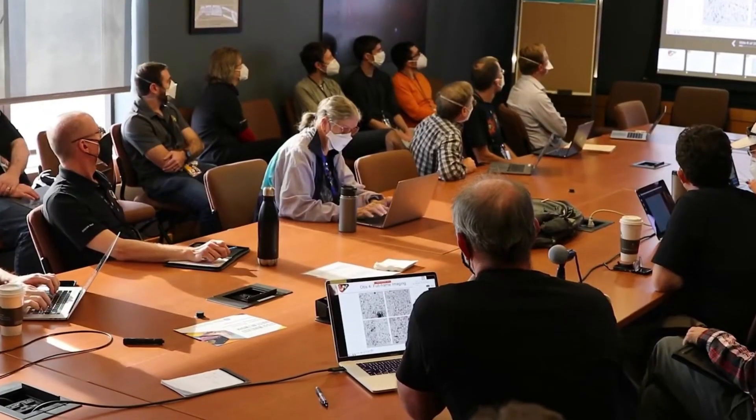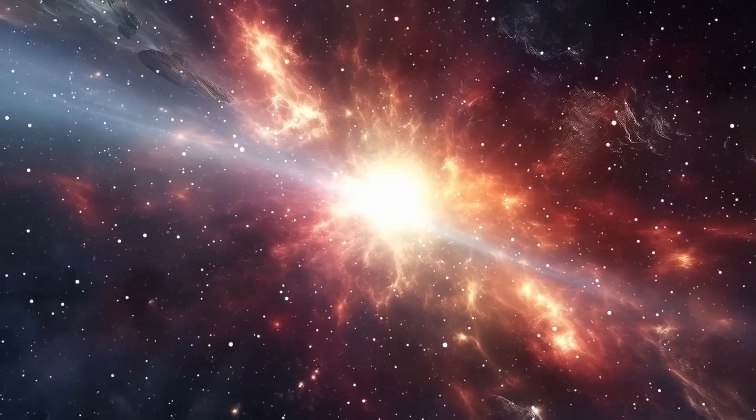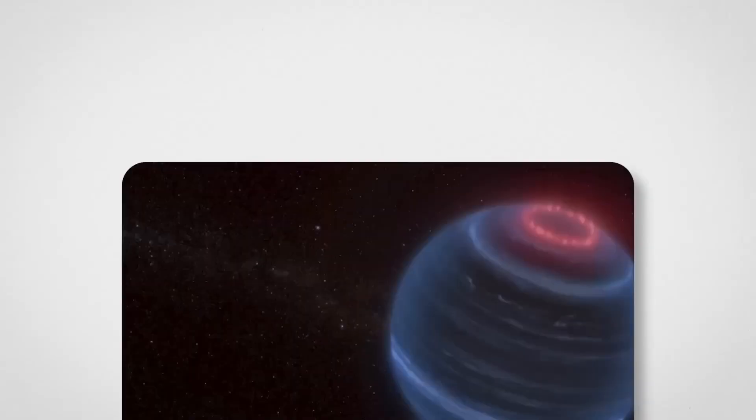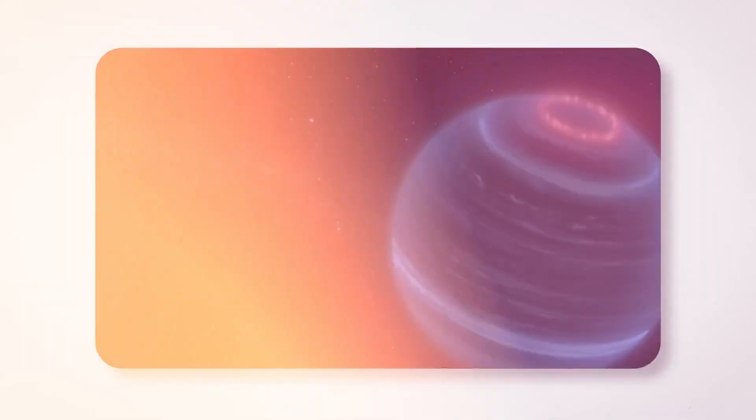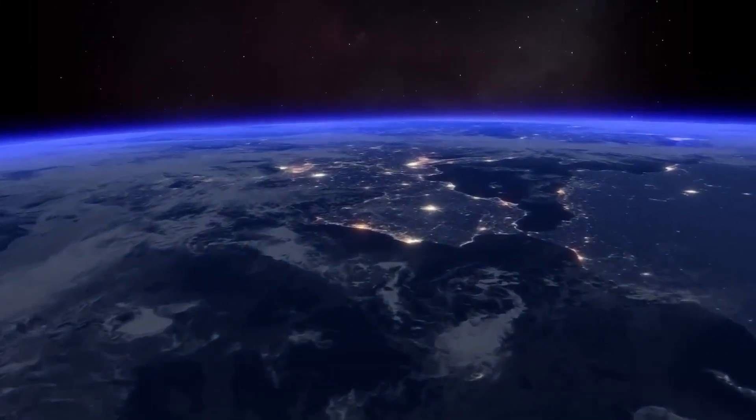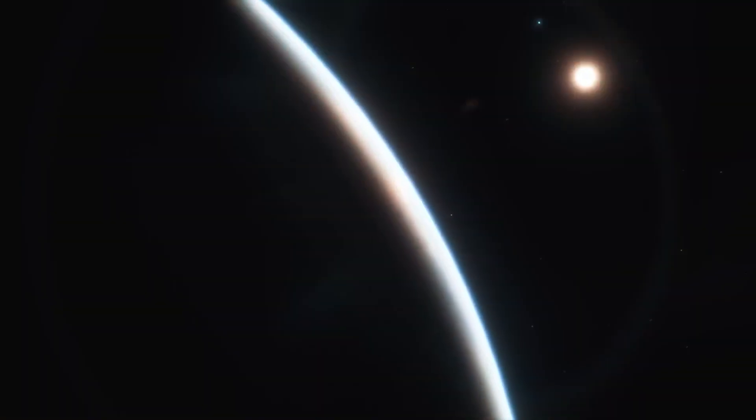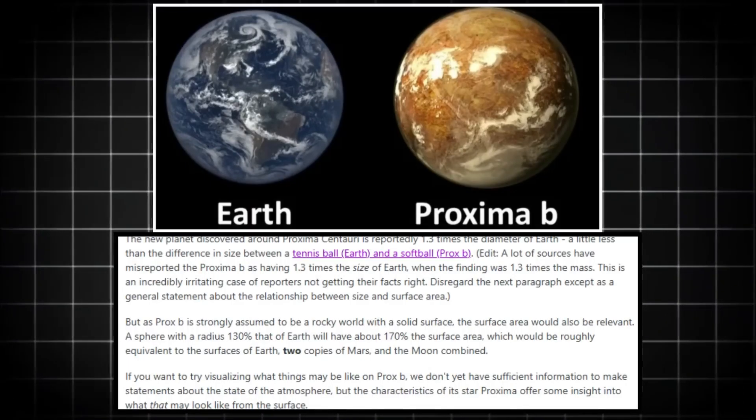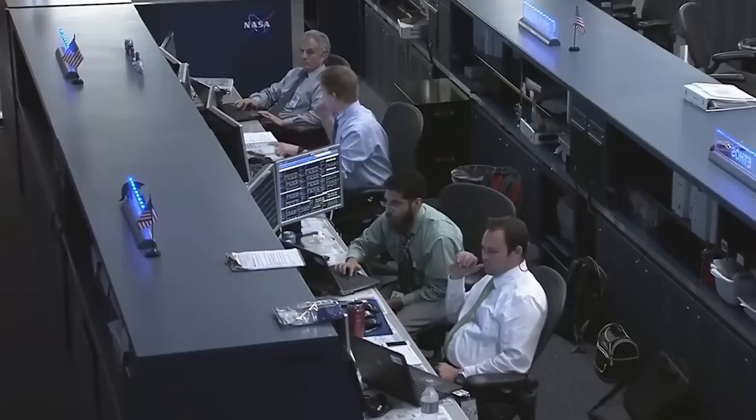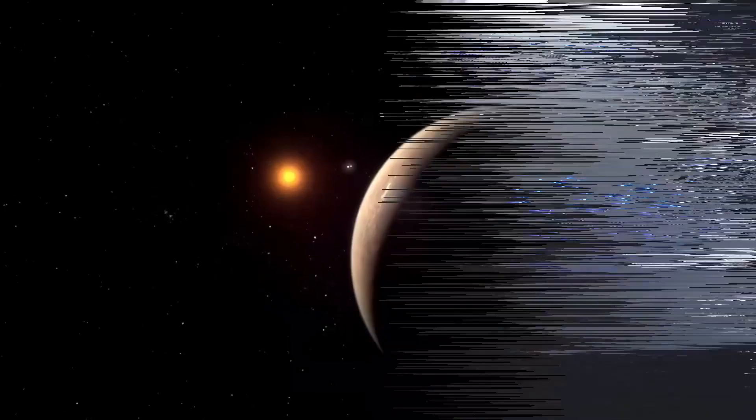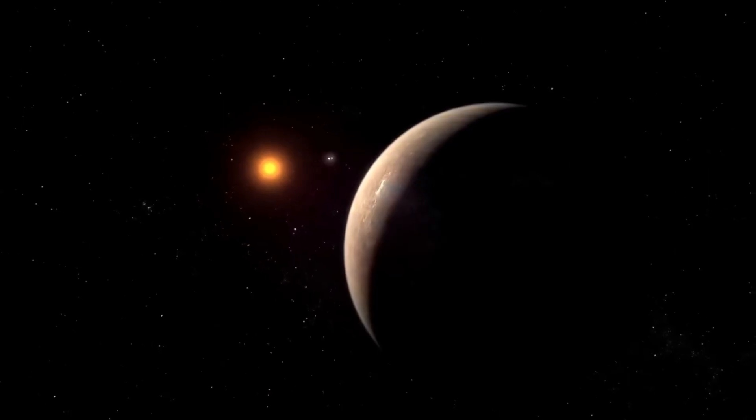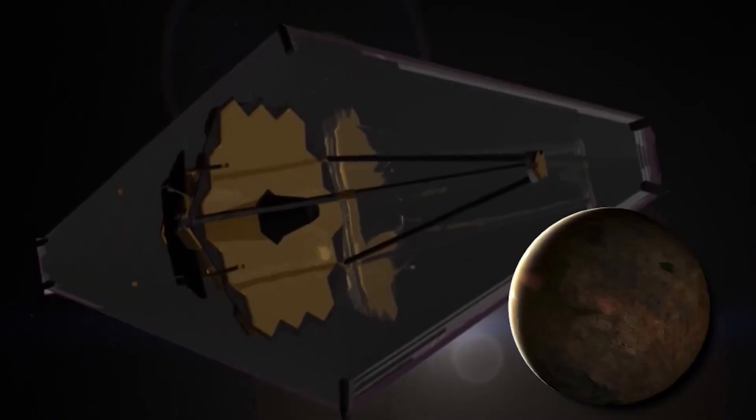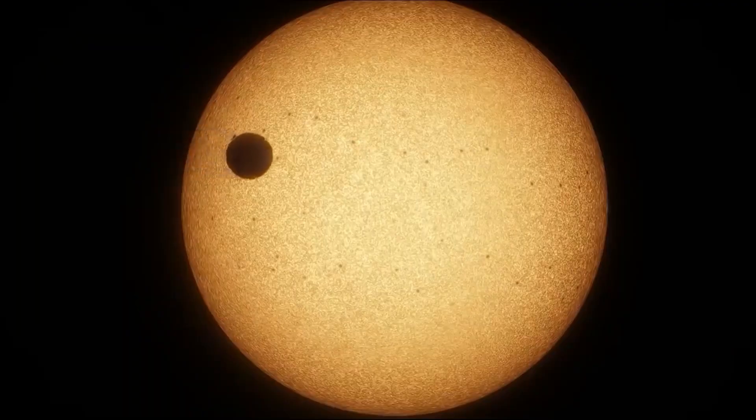The James Webb Space Telescope is one of the most advanced and ambitious space observatories ever built. But what makes this telescope so special, and why was it created? To understand its importance, we need to go back to the early 2000s when scientists and engineers began imagining what could take humanity's understanding of the universe to the next level. Their solution was something unprecedented: a telescope that could peer deeper into space and farther back in time than anything before it.